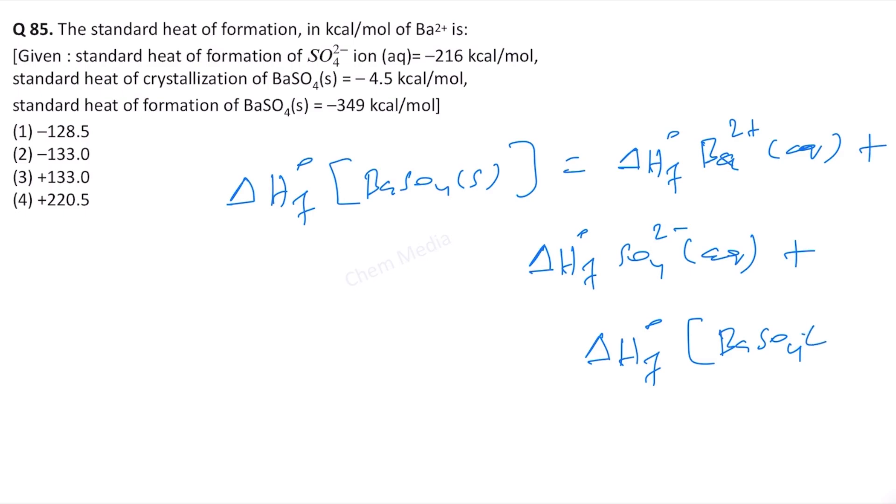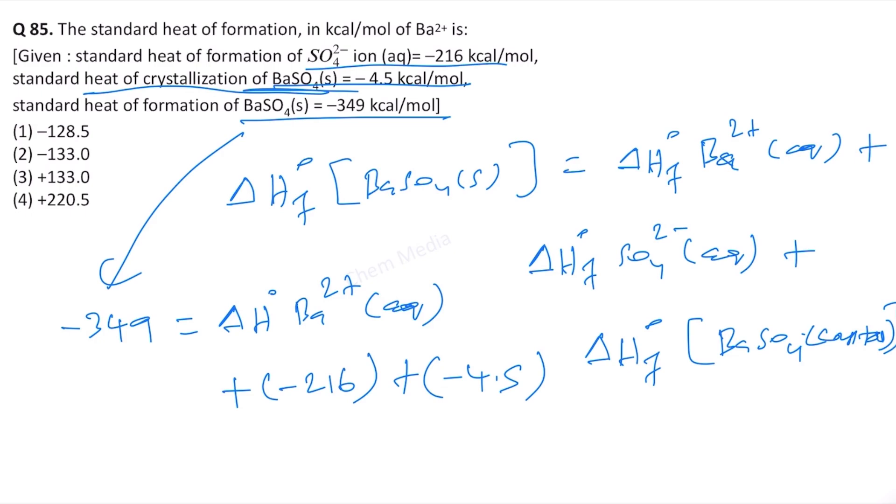Barium sulfate solid is also given, so we just need to substitute all the values. Minus 349 is equal to—that's what is given here—standard heat of formation for barium 2 plus, we need to calculate, and then plus in bracket minus 216, so that's the value for SO4 2 minus, plus in bracket minus 4.5, so that's the value for the heat of crystallization. That's what we need to sum it up.